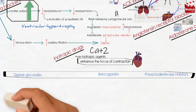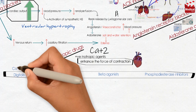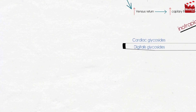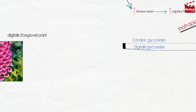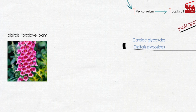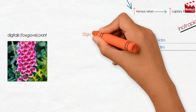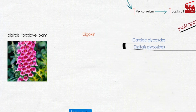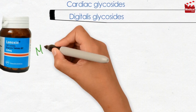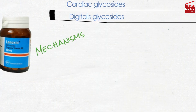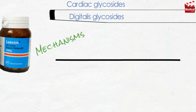The first group in this category is cardiac glycosides, also known as digitalis glycosides. They are a group of chemically similar compounds that come from the digitalis plant, also known as foxglove. The most widely used agent is digoxin.